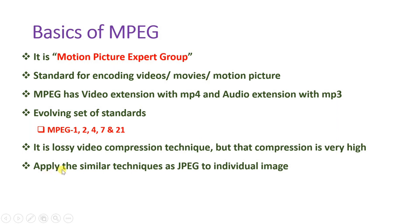MPEG applies a similar technique to what JPEG uses for individual images. We have already seen JPEG in the previous session. Here we apply a similar technique, but to have a motion picture you need a sequence of images. In JPEG there is a single image only, while in motion picture there will be a sequence of images.